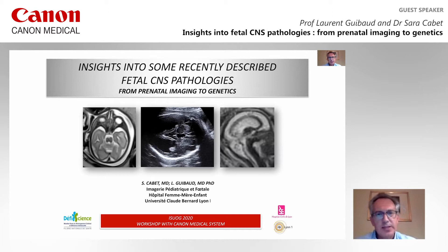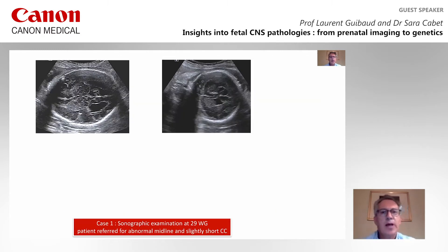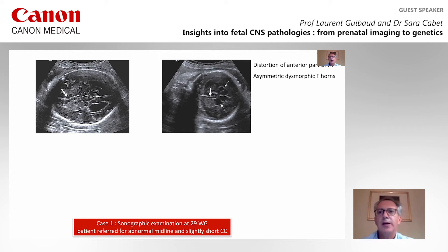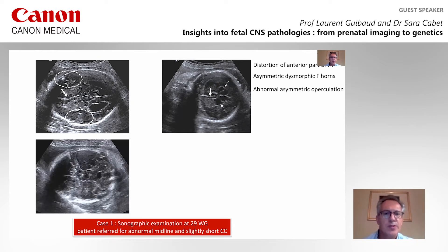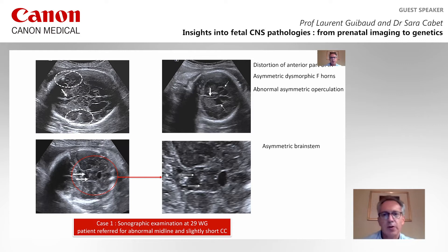The first case is a patient referred for abnormal midline and slightly short corpus callosum. On this axial and coronal view, you can appreciate the distortion of the anterior part of the interhemispheric fissure, asymmetric dysmorphic frontal horns, as well as abnormal asymmetric operculation of the Sylvian fissure. On the infratentorial structure, there is a subtle finding, which is this asymmetric brainstem.